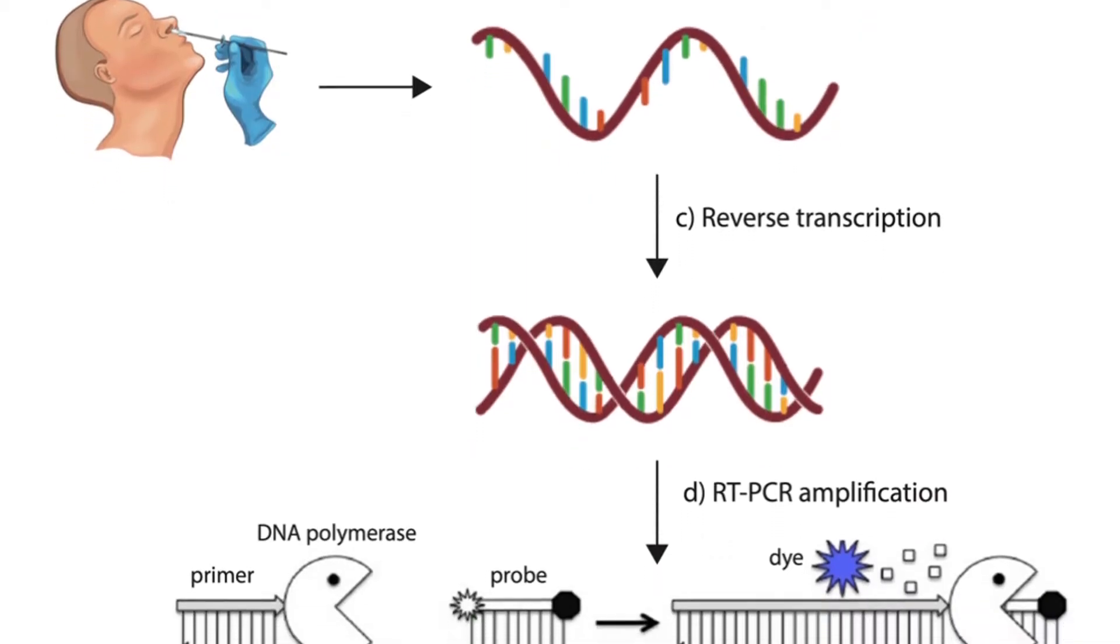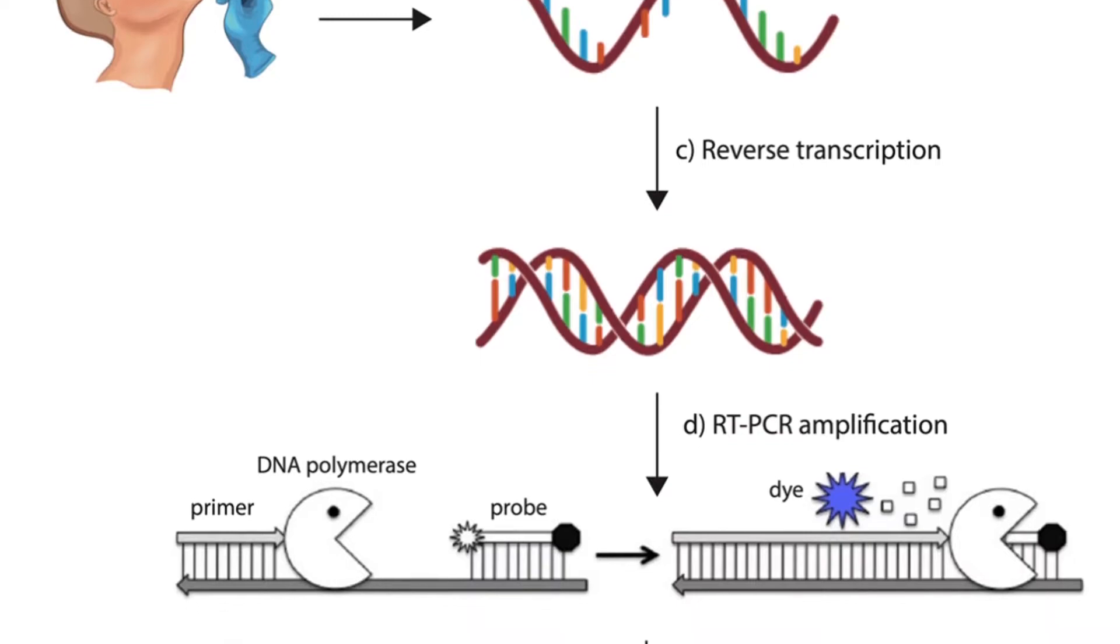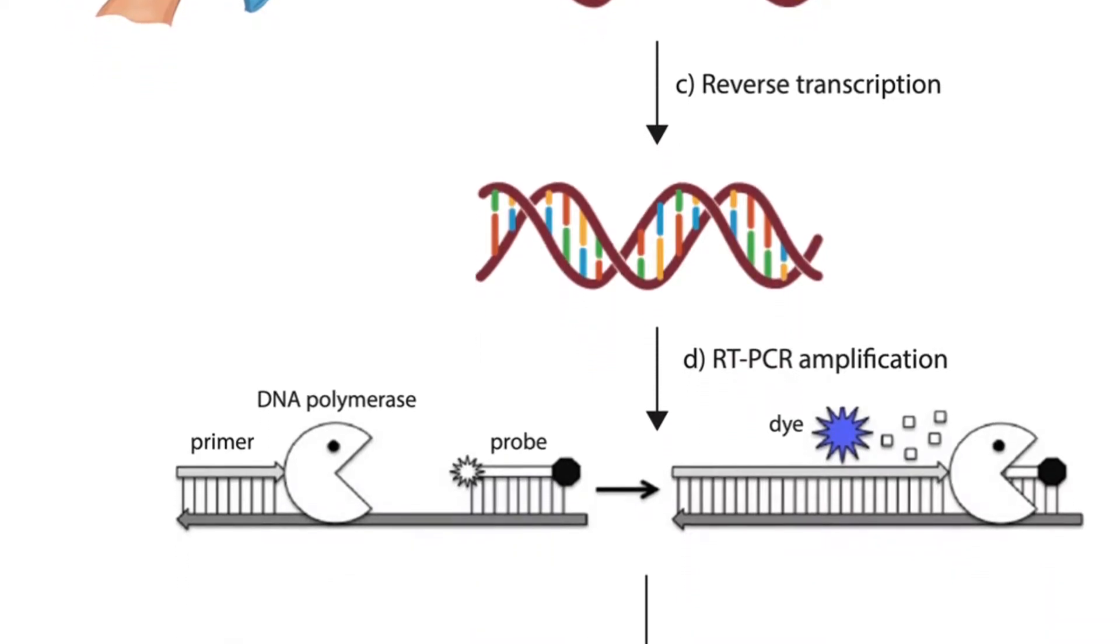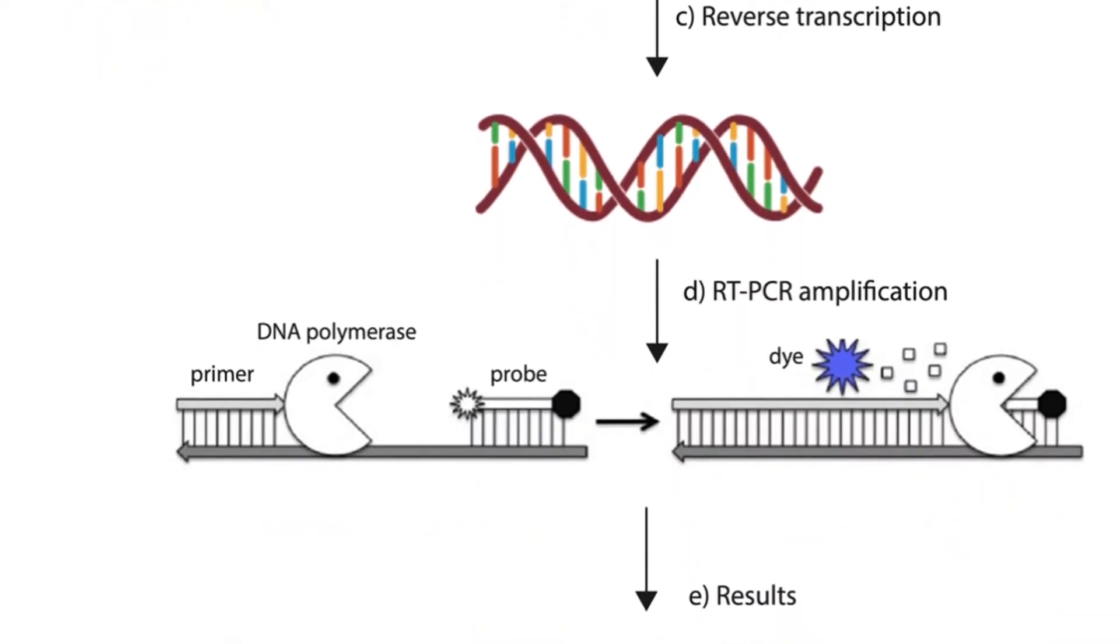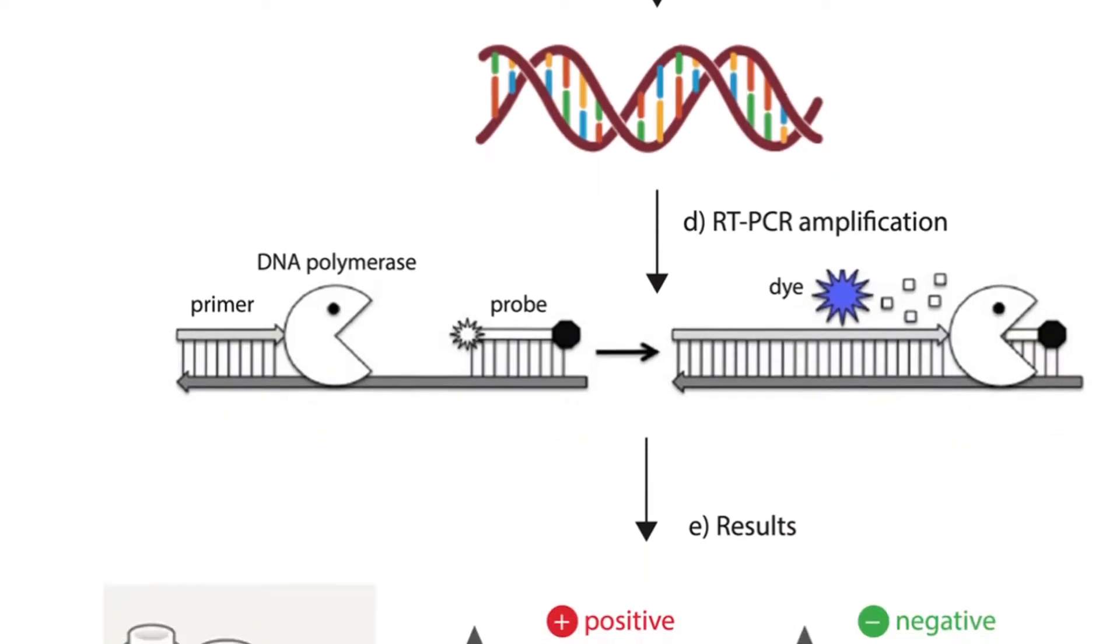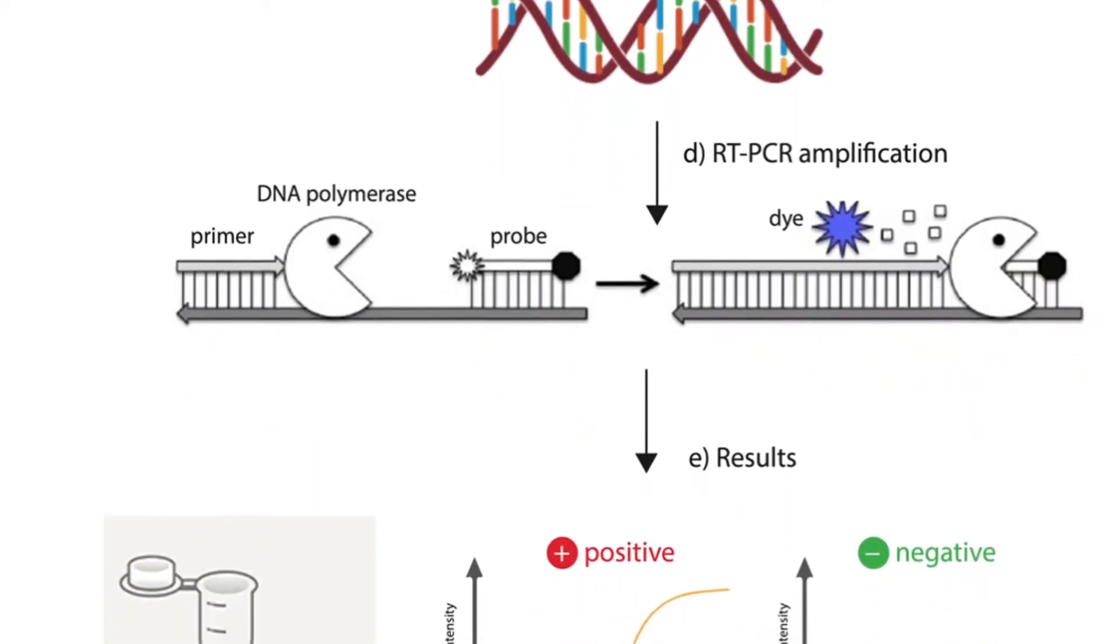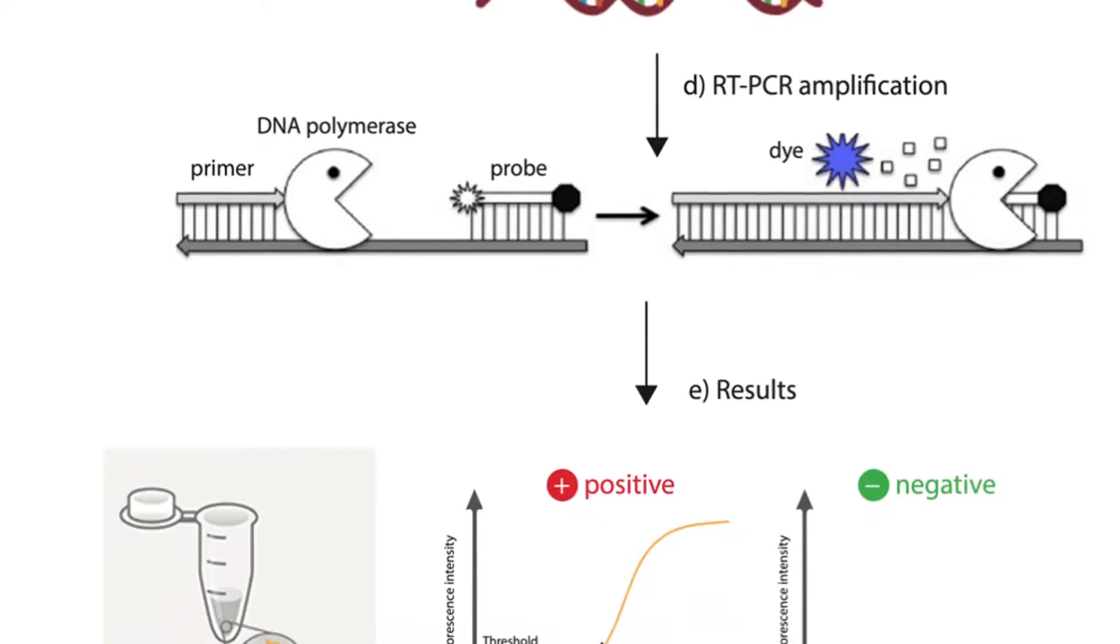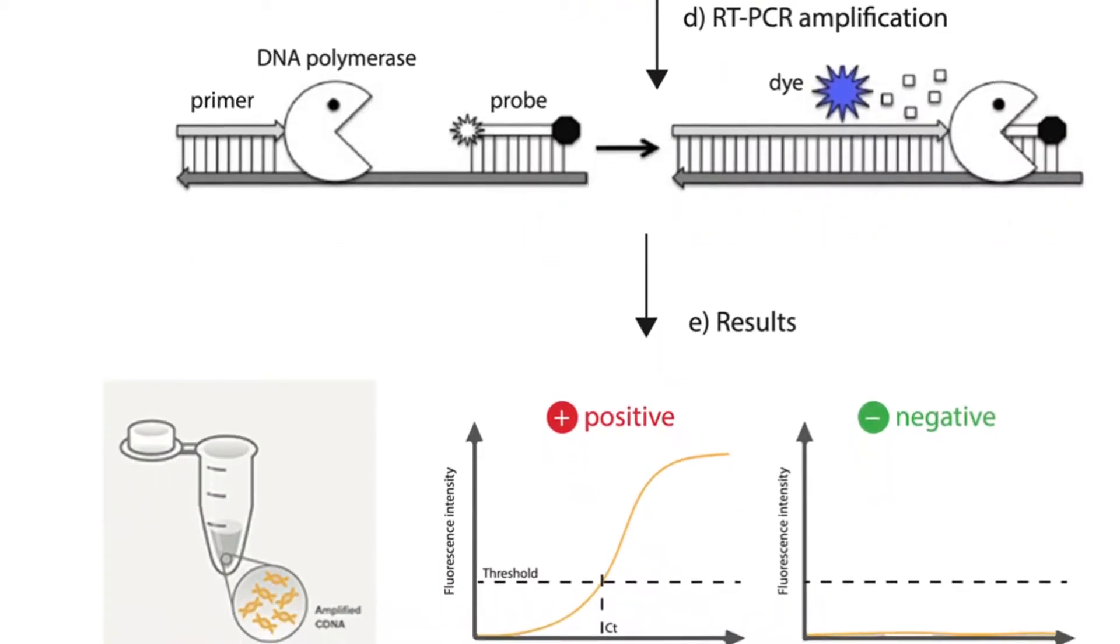The most reliable way to diagnose COVID-19 is detection of the viral RNA using RT-PCR. However, the diagnosis is time-consuming and requires a bulky RT-PCR instrument, which makes decentralized point-of-care diagnosis impossible using this method.